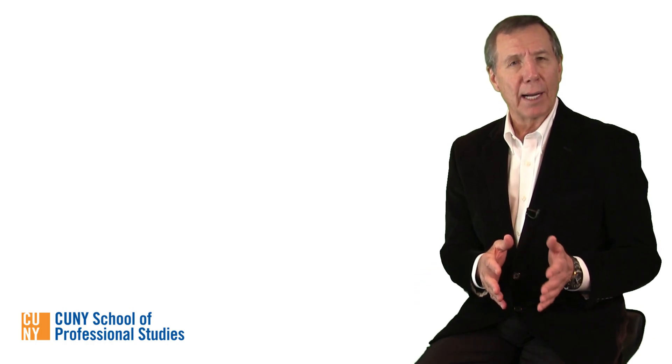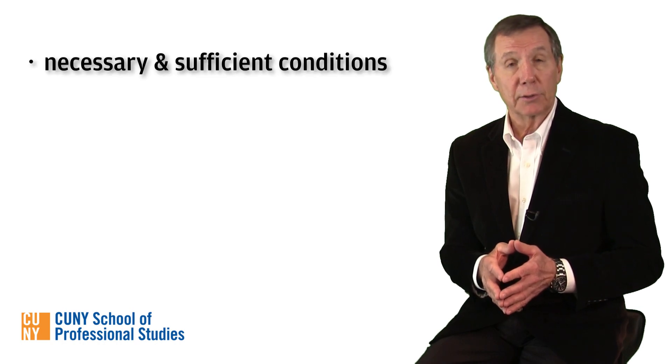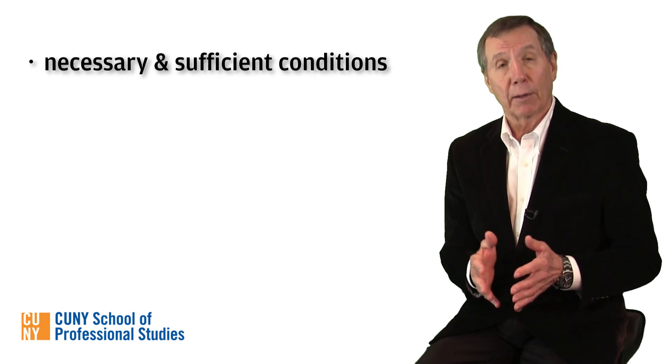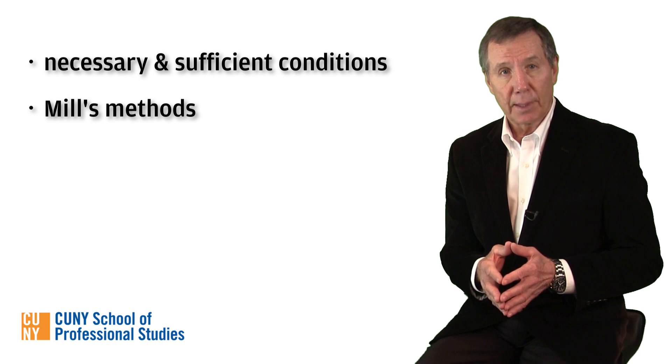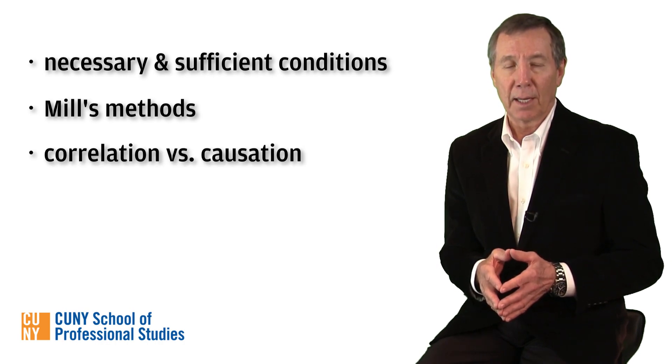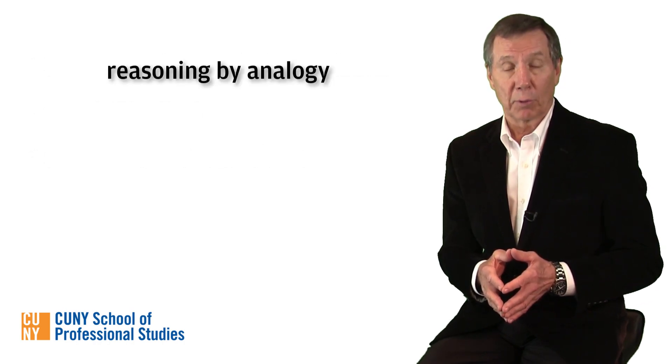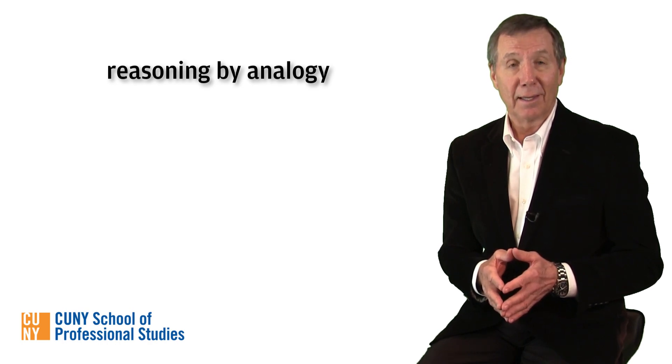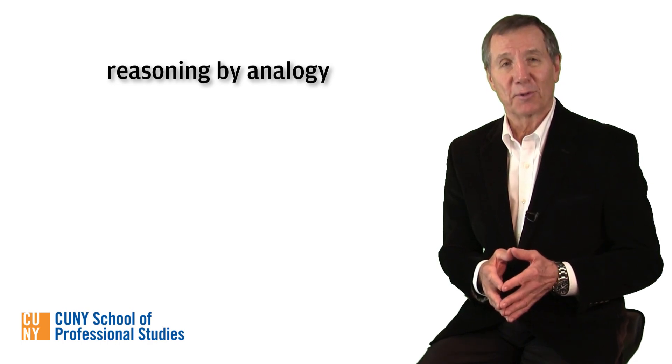Well, that's it for causal reasoning. You now know how to discern between necessary and sufficient conditions, how to apply Mill's methods, and how to distinguish correlation from causation. Up next, the fourth and final kind of inductive inference we'll examine, namely, reasoning by analogy. Until then, best wishes.